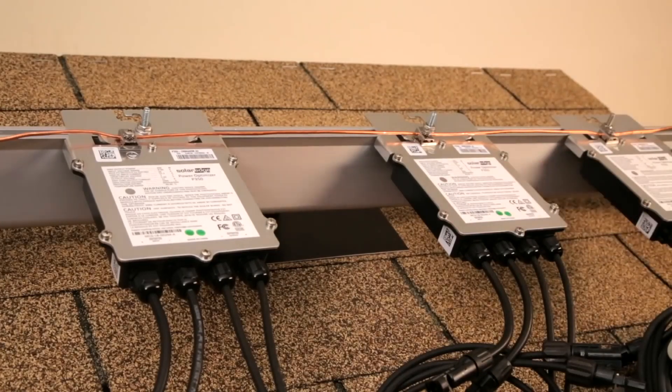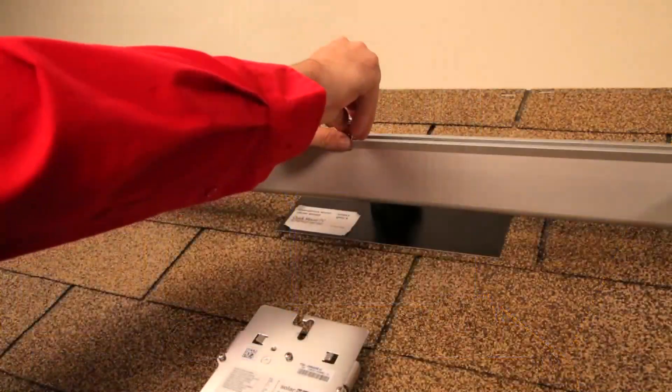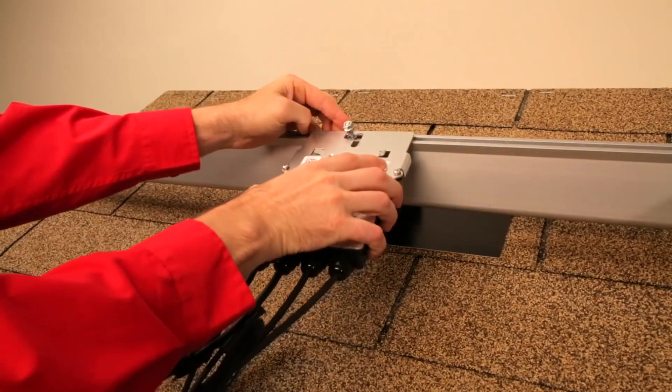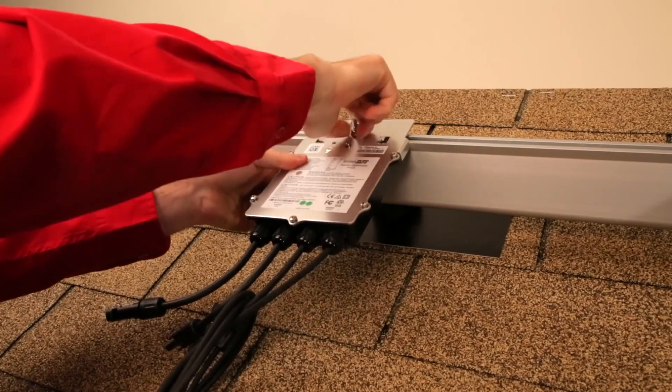With the state of Wisconsin now under the NEC 2017 code for commercial buildings, we have found that the P860 optimizer is the best solution to meet module level rapid shutdown. This is because you only need one power optimizer for every two solar modules.